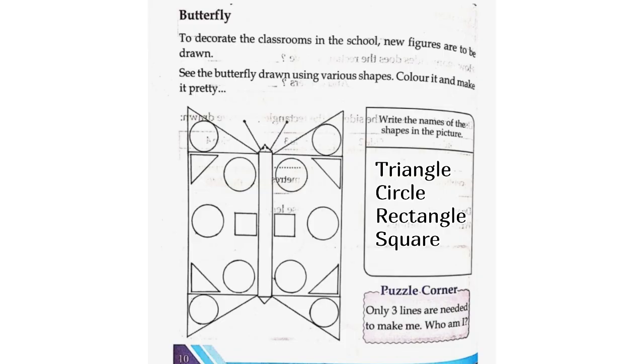Puzzle Corner. Only three lines are needed to make me. Who am I? Triangle.